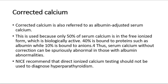Corrected calcium is also referred to as albumin-adjusted serum calcium. This is used because only 50% of serum calcium is in the free ionized form, which is biologically active. 40% is bound to proteins such as albumin, while 10% is bound to anions. Thus, serum calcium without correction can be spuriously abnormal in those with albumin abnormalities.